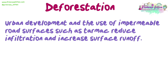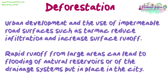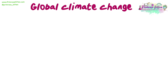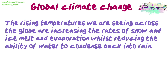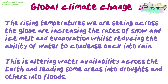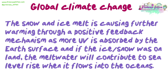Urban development and the use of impermeable road surfaces such as tarmac reduce infiltration and increase surface runoff. Rapid runoff from large areas can lead to flooding of natural reservoirs or of the drainage systems in the city. The next human impact is global climate change. The rising temperatures we are seeing across the globe are increasing the rates of snow and ice melt and evaporation, whilst reducing the ability of water to condense back into rain. This is altering water availability across the earth, leading some areas into droughts and others into floods. The snow and ice melt is causing further warming through a positive feedback mechanism, as more UV is being absorbed by the earth's surface. And if the ice or snow was on land, the meltwater will contribute to sea level rise when it flows into the oceans.